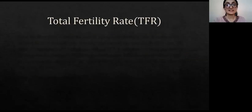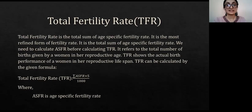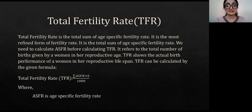The last is total fertility rate. Total fertility rate is the total sum of age-specific fertility rates and is the most refined form of fertility rate. We need to calculate ASFR before calculating TFR. It refers to the total number of births given by a woman in a reproductive age. TFR shows the actual performance of a woman in a reproductive lifespan. TFR can be calculated by the formula: summation of ASFR multiplied by 5, divided by 1,000, where ASFR is age-specific fertility rate.